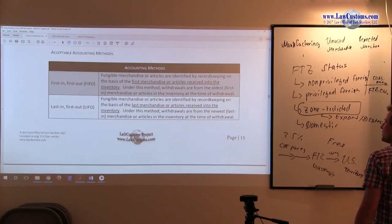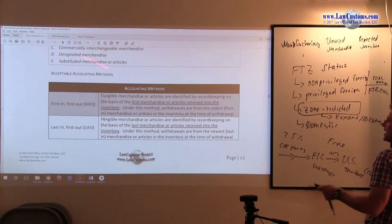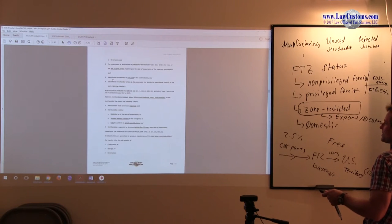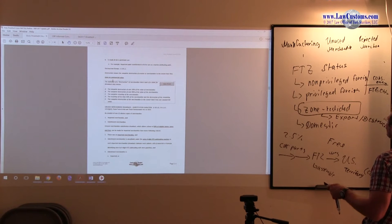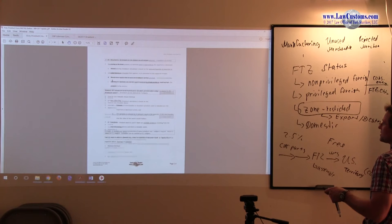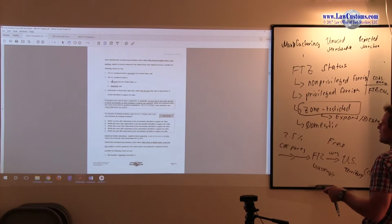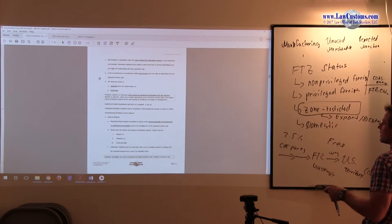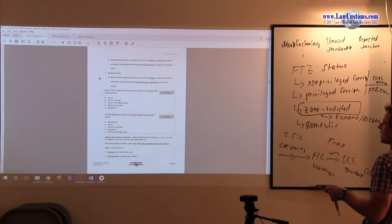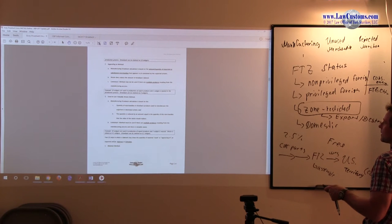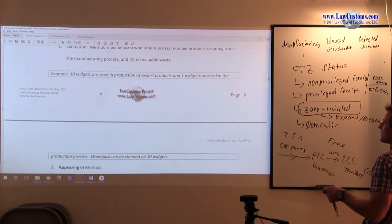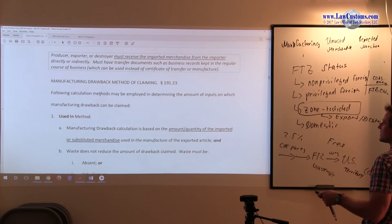All right, so accounting methods. We saw the accounting methodology before in terms of the direct manufacturing drawback, the manufacturing direct identification drawback. Here are the methodologies that we discussed and how you claim this.